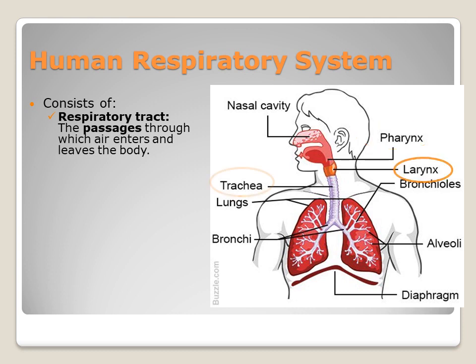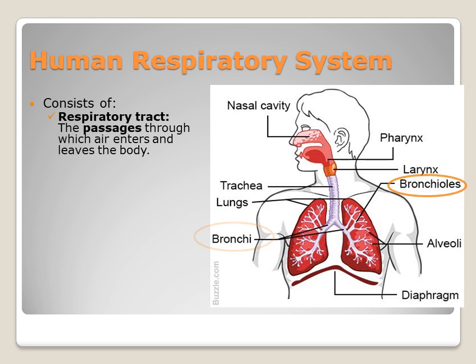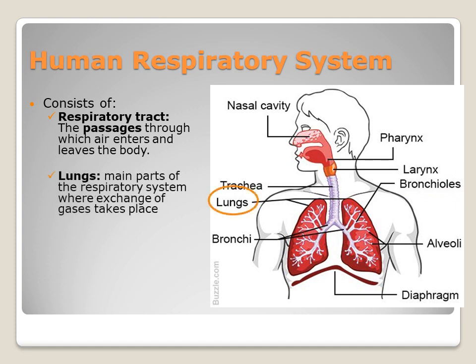The respiratory tract also includes the larynx, the trachea which is a tube-like structure, and two bronchi which divide into many branches called bronchioles. The second part of your respiratory system consists of two lungs where exchange of gases takes place. You must take into consideration that exchange of gases takes place at the level of your lungs only through bag-like structures at the end of each bronchiole, which are called alveoli.